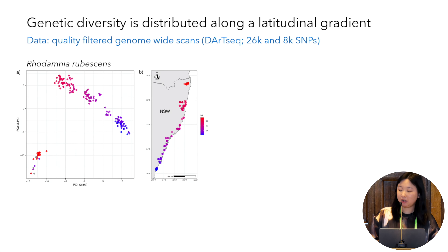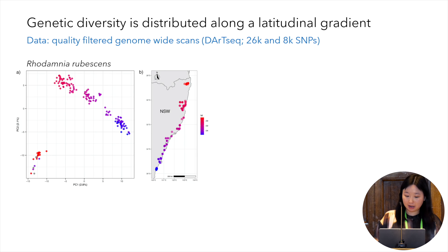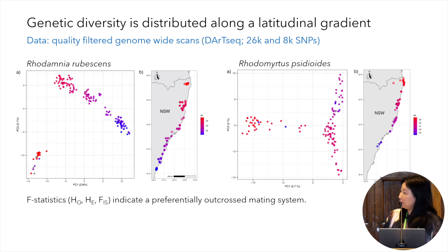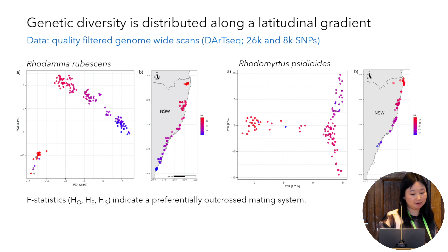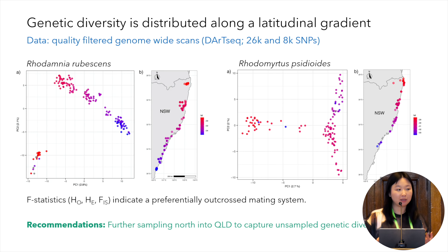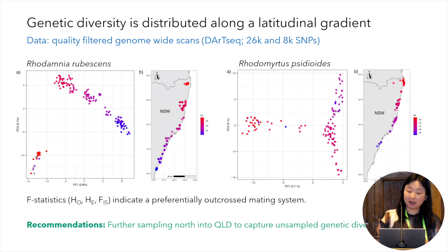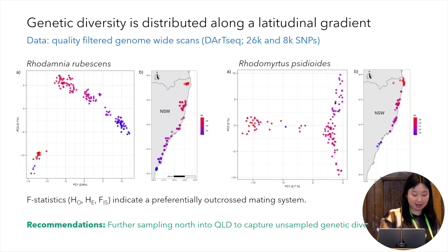Genetic variability is present in Rhodamnia rubescens and is distributed along a latitudinal gradient, as we can see in the gradient colouring on the principal component analysis, where like clusters with like, and the map of samples. The same gradient was seen in Rhodomyrtus. F-statistics — the observed and expected heterozygosity and inbreeding coefficient — indicated a preferentially out-crossed mating system for both species. Both species' distribution extends north into Queensland, and from these observed patterns, it's expected that those populations harbour genetic variation not represented within the current ex-situ collection. Therefore, sampling and analyses from Queensland are recommended to capture that increased genetic variability, and this is currently underway in collaboration with the Queensland Government.